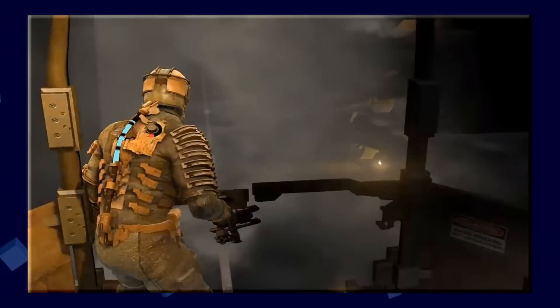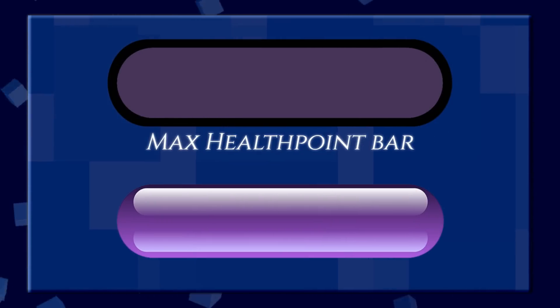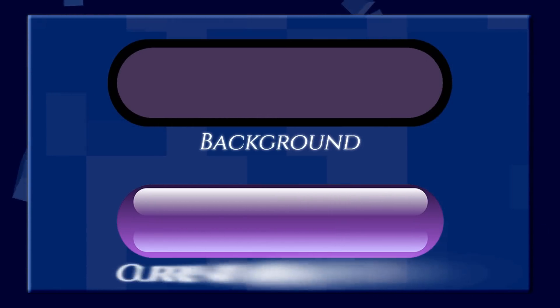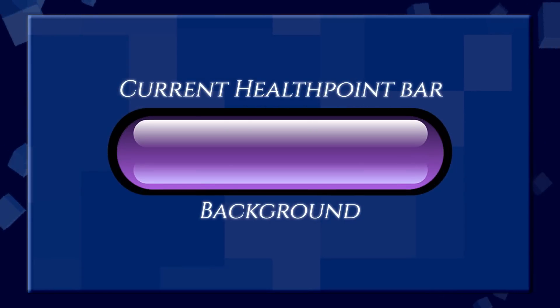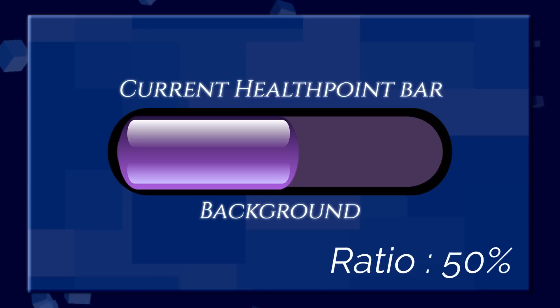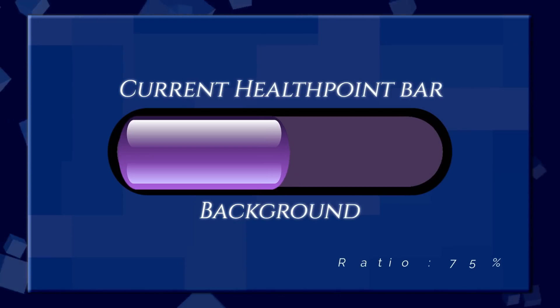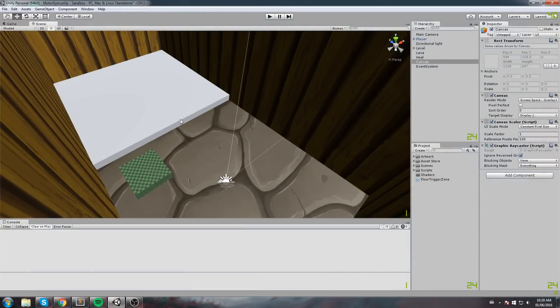In today's episode we'll focus on the more traditional approach, which is basically made out of two main pieces of UI: the max hit point bar — which we can call the background — and the current hit point bar displayed on top of the background. The information is transferred by modifying the scale of the current hit point bar so it reflects the ratio of current hit points versus maximum hit points. And just like that we've got ourselves a traditional health bar.